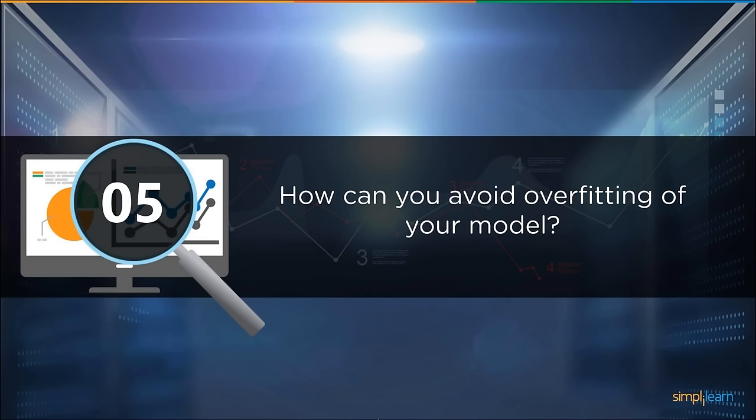We want to predict the probability of death from heart disease based on three risk factors: age, gender, and blood cholesterol level. What is the most appropriate algorithm? The options are logistic regression, linear regression, k-means clustering, or the Apriori algorithm. If you selected logistic regression, you got the right answer. Linear regression deals with continuous numeric values along a line. K-means clustering groups objects together. Logistic regression allows you to mix features into probabilistic buckets, making it the most apt fit for a binary classification like predicting death from heart disease.